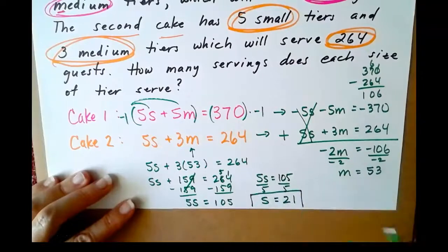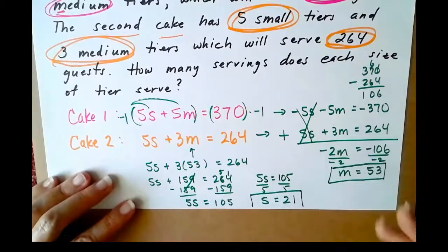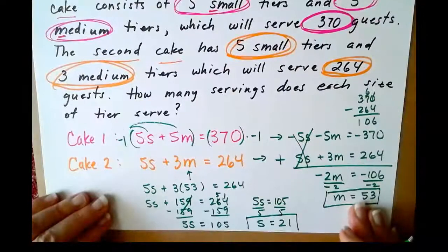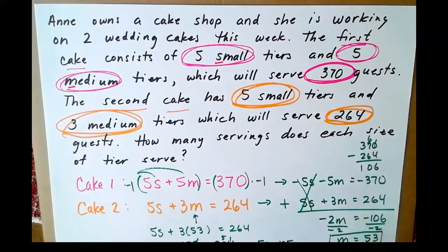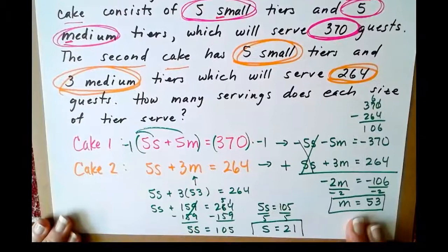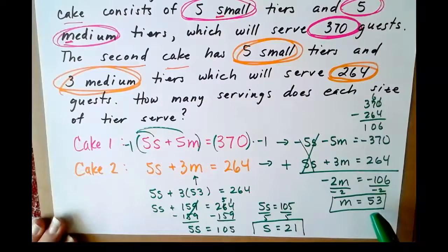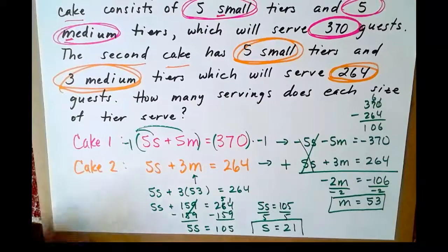So, 21 servings of cake out of a small tier, 53 servings of cake out of a medium tier for wedding cakes. So, once again, think about what we did. We read the entire problem, and then we went back and we wrote the equations, then we solved it with elimination. So, medium tiers, 53 servings each. Small tiers, 21 servings each.